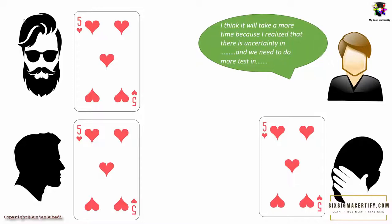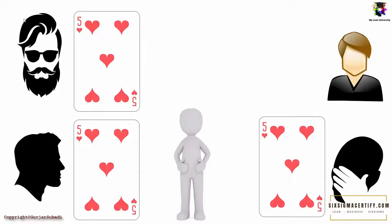He says that he thinks it will take more time because he realized that there is uncertainty and there is a need for more testing. Suppose in the next round all agreed upon the 5 and the story was closed assigning it the importance rank of 5. We can close the talk at 5 as there is no big difference between 5 and 8, but the decision has to be done unanimously.